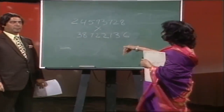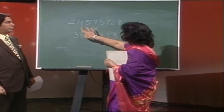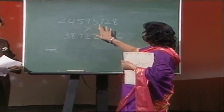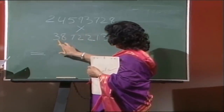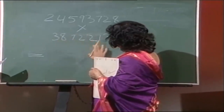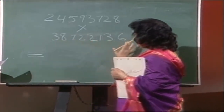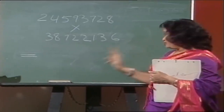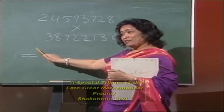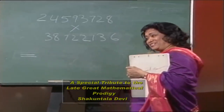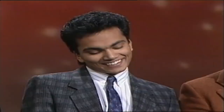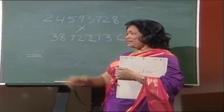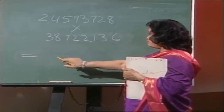Now the question is: 24593728 multiplied by 38722136. Tell me, do you want me to give you the answer from this side to this side, or this side to this side? Let the shaker decide.